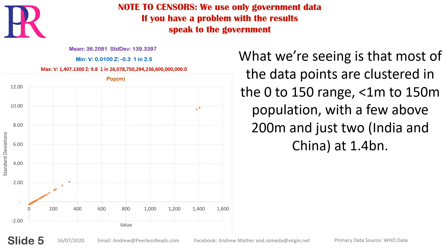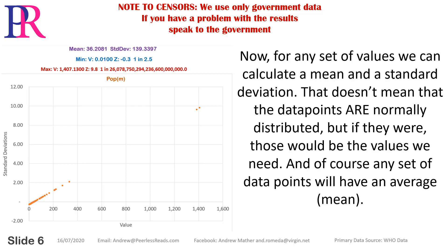We're seeing that most data points are clustered in the zero to 150 million range, with a few above 200 million, and just two — India and China — at 1.4 billion. For any set of values we can calculate a mean and a standard deviation. That doesn't mean the data points are normally distributed, but if they were, those would be the values we need.